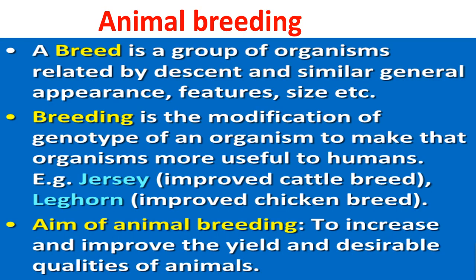Next topic is animal breeding. To understand animal breeding, first you need to know about the breed. A breed is a group of organisms related by descent — meaning a group of organisms having a common ancestor. These organisms also have similar general appearance, features, size, etc. So a group of organisms having similar general appearance, features, size, a common ancestor, and related by descent are said to belong to a common breed.